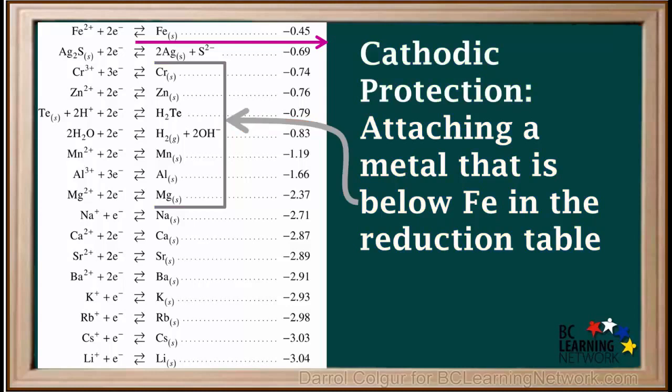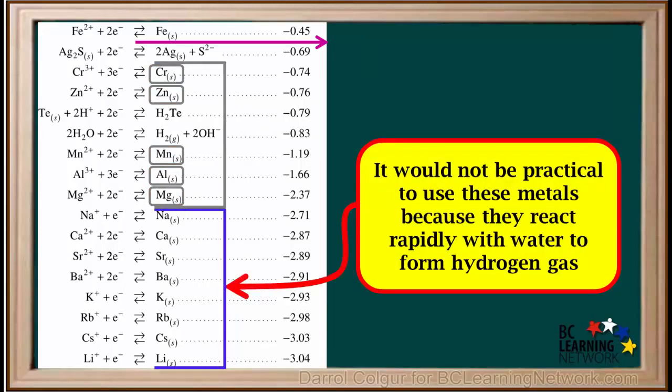Some metals we could use for this are chromium, zinc, manganese, aluminum, or magnesium. It would not be practical to use metals below magnesium on the table. They react rapidly with water to form hydrogen gas.